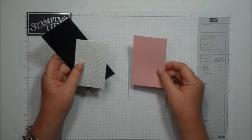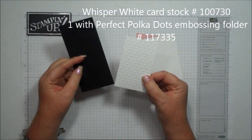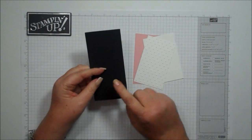Here are the pieces that you're going to need. You're going to need Blushing Bride, Whisper White, and then I use this Whisper White with the perfect polka dots embossing folder to get the dots on there, and then you'll need a piece of black.